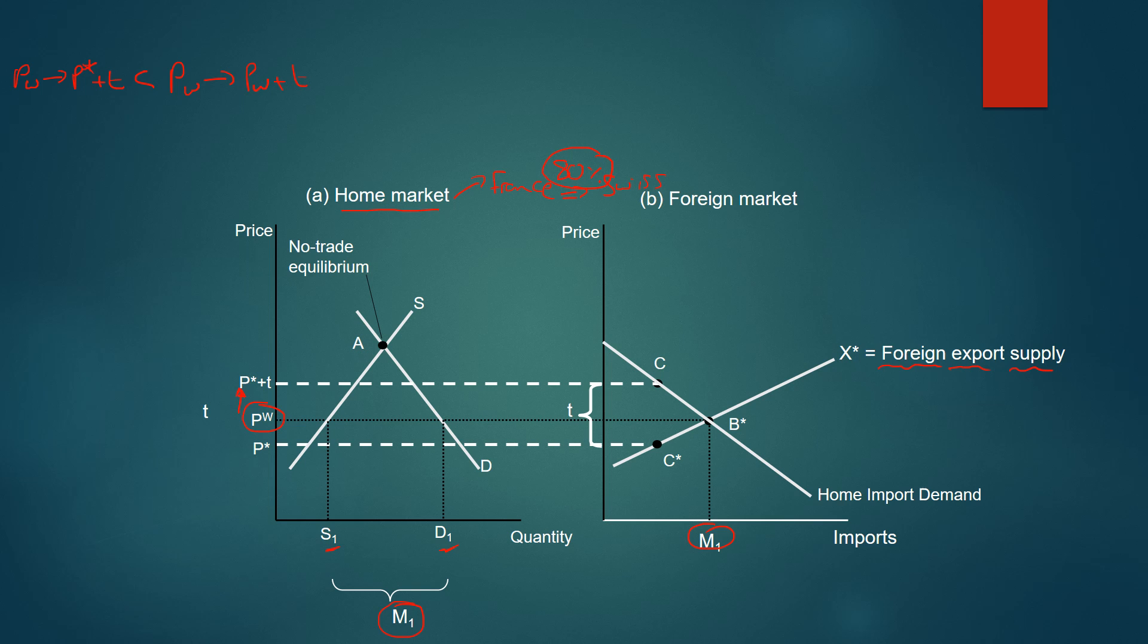Why is this? The reason for this is because essentially the producers are absorbing part of this tax. Precisely, they're absorbing this amount of that tax. This is because the foreign producers are now accepting a price of P star. Why is that?